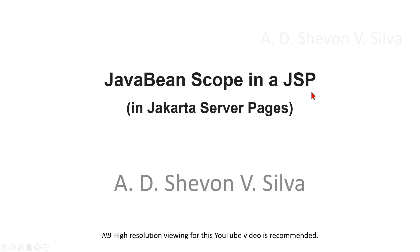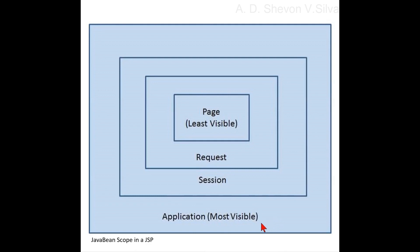JavaBean scope in JSP — in Jakarta Server Pages. We are considering JavaBean scope in JSP. JavaBeans have scope just like all variables. You declare this in JSP using the useBean element when you use the Bean for the first time. There are multiple scopes possible for a Bean.